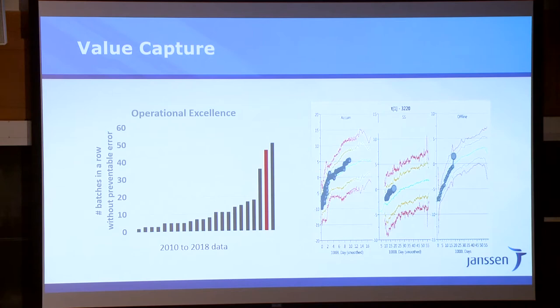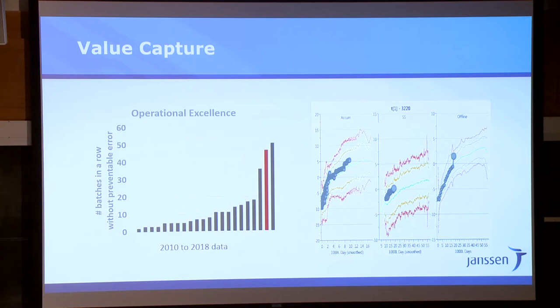Here's my favorite example. This is one of our plants — the first plant where we installed multivariate analytics. You're looking at the number of batches run without making an error. The median before we did this, since the plant opened, was about 9 or 10 batches. Right now, since we installed it, we are approaching 60 batches and we're still going strong. It's amazing what the operating crew can do with a little bit of access to real-time data and understanding what is drifting when things go off the rails.